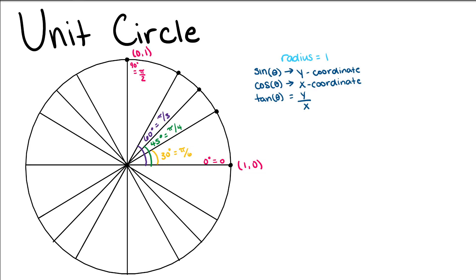So if we look at our point at (1, 0), here we have 0 degrees as our angle measurement. Since our x corresponds to our cosine and y corresponds to our sine, we can see that the sine of 0 is 0, the cosine of 0 is 1, therefore the tangent of 0 is 0 over 1, which is just 0.